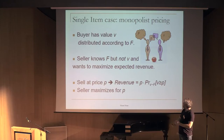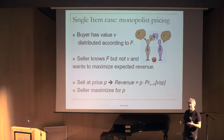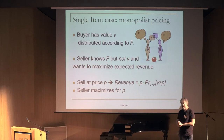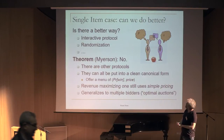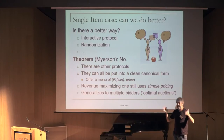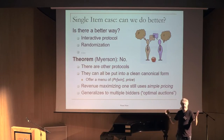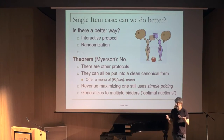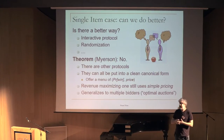From a computer scientist's perspective, the interesting question is: is putting a price p the only way to sell the item? In principle, two people can use weird protocols, randomization, interaction, cryptographic protocols — there are more ways to sell than just posting a price. Are any of them useful?